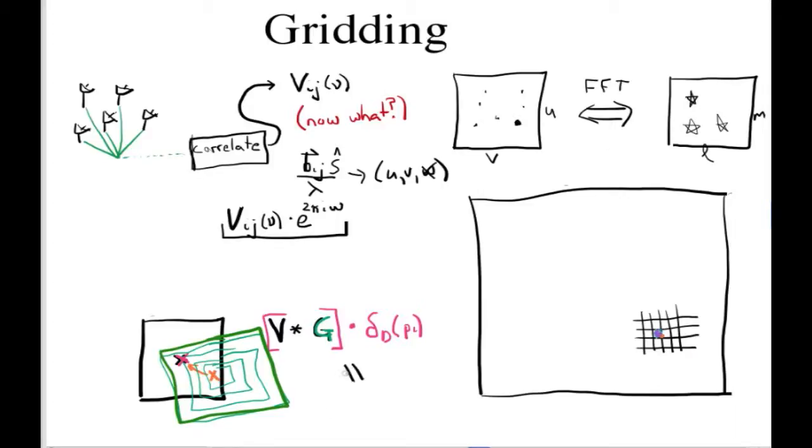Therefore, the result of this process is to take your true sky and multiply it by the Fourier transform of your gridding kernel. For this case, where we chose a gridding kernel that is a top hat function with the width of one pixel, the Fourier transform of that is going to be the two-dimensional equivalent of a sinc function.